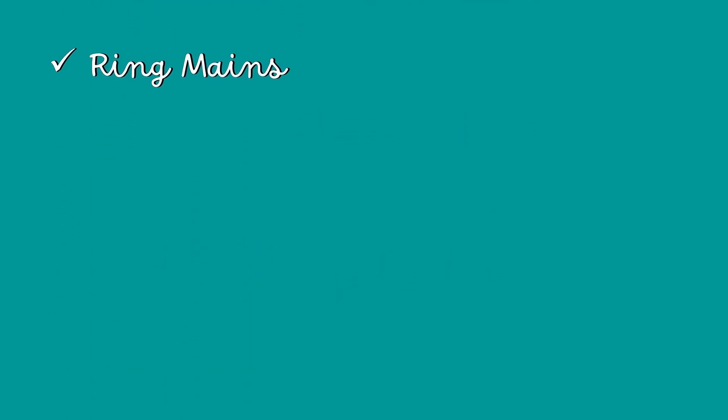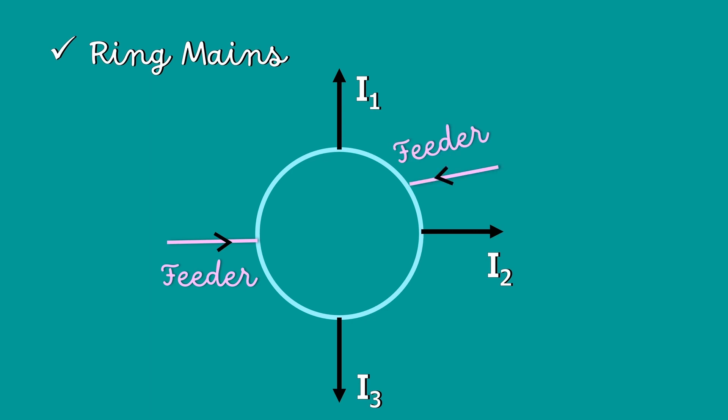The fourth type is the ring main. In this type, the distributor is in the form of a closed ring. The distributor ring may be fed at one or more than one point.